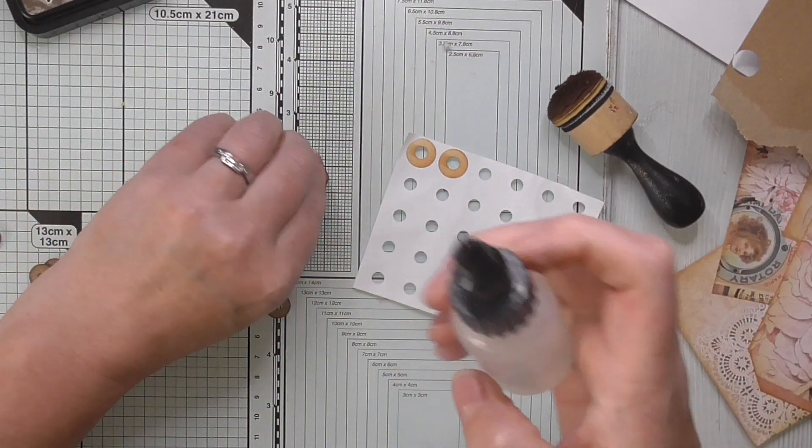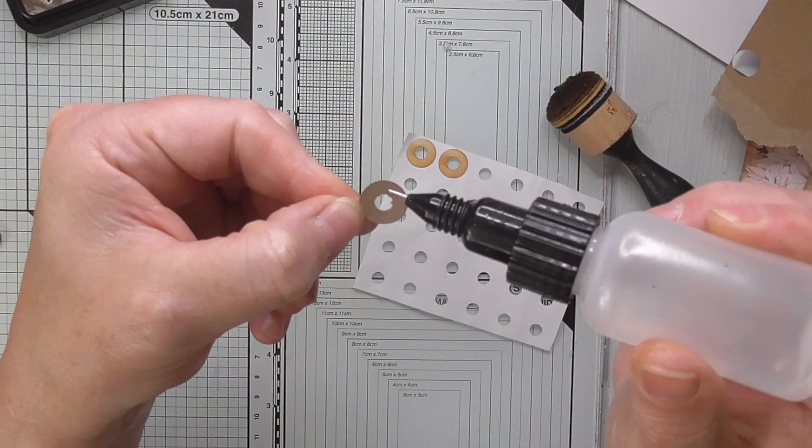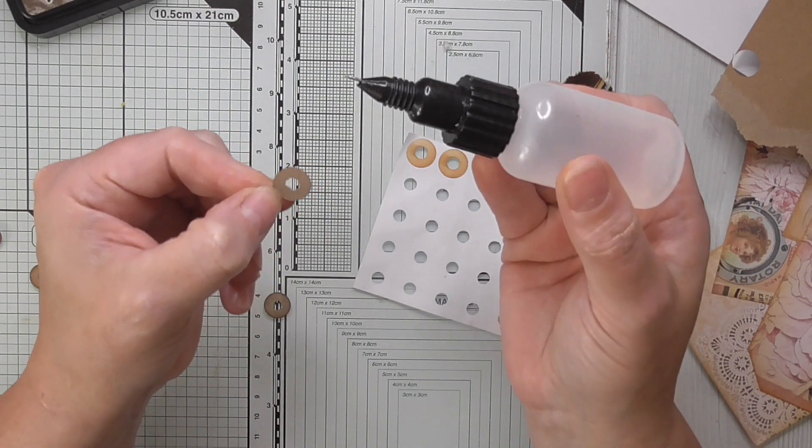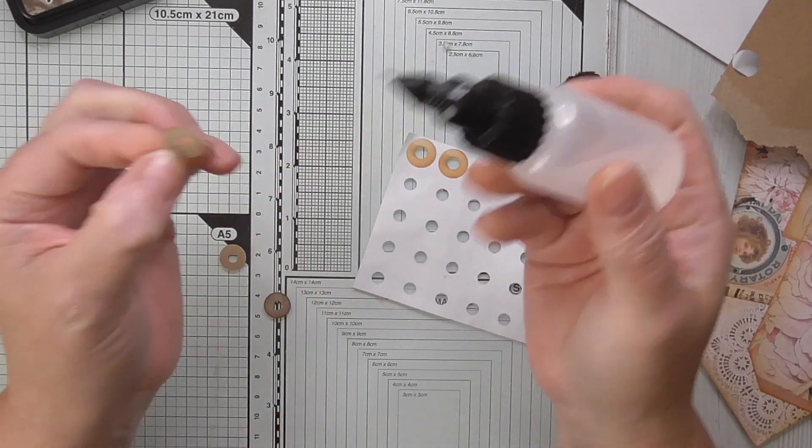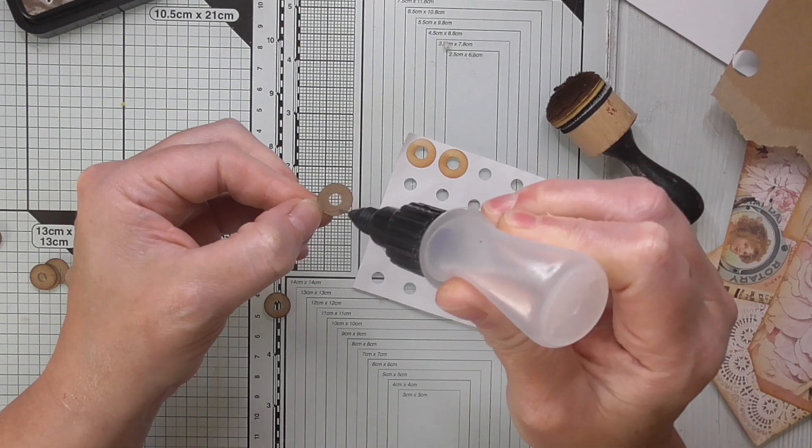Then get a fine tipped glue bottle if you can because this is going to help you be more accurate with your glue and also you're going to use less. So this is an old different brand of glue that has got a fine tip nib there. I've emptied it and put my glue in that I like to use.